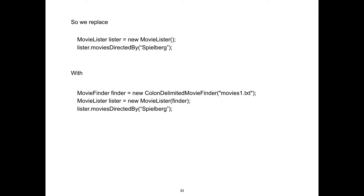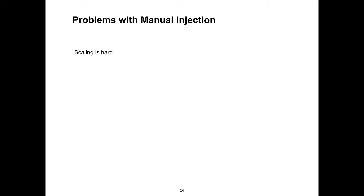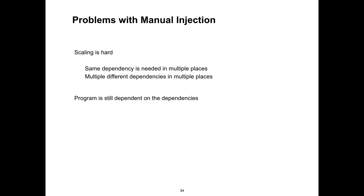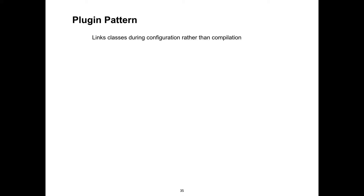Instantiate an abstract factory, and now all those 20 places where you inject things, you just say 'give me the MovieFinder, give me this,' and inject it into that. Once you go to that step, there's one more obvious step. Managing it is hard, but the abstract factory will help a lot here.